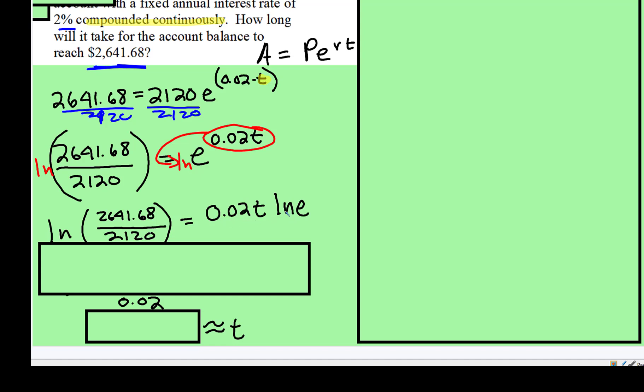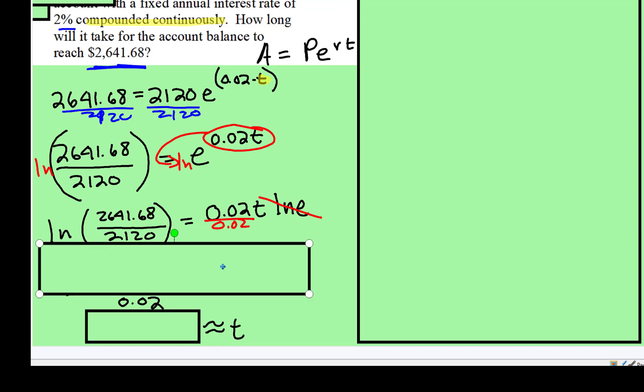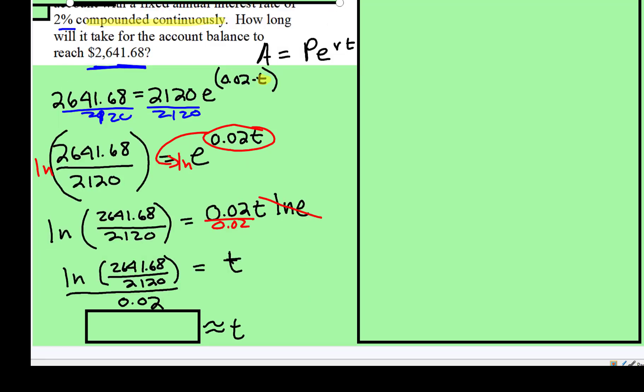And notice the natural log of E is 1, so that can cancel. The only thing you have left to do, because we're trying to get T by itself, is to divide both sides by 0.02. Just like that, and I don't think that I have put that into the calculator yet, so let's do that now.